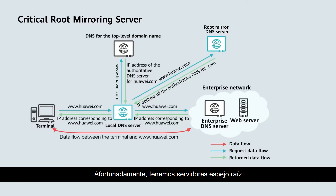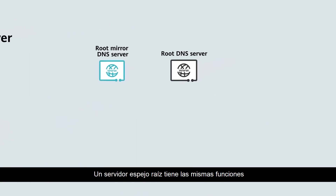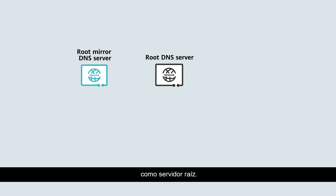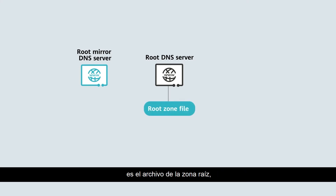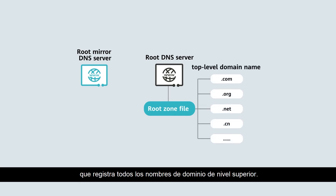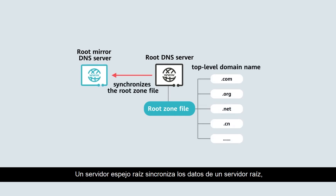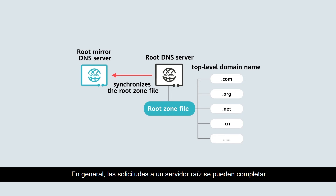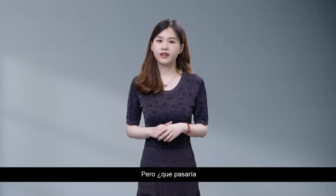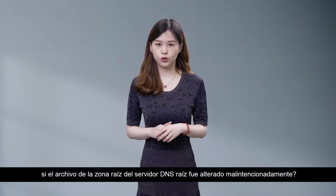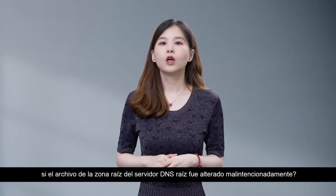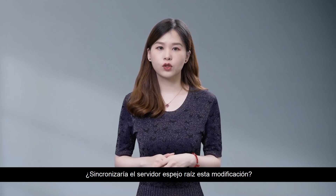Luckily, we have root mirror servers. A root mirror server has the same functions as a root server. The most important thing on a root DNS server is the root zone file, which records all top-level domain names. A root mirror server synchronizes data from a root server, meaning they eventually have the same root zone file. Generally, requests to a root server can be completed through a root mirror server. But what would happen if the root DNS server's root zone file was maliciously altered? Would the root mirror server synchronize this modification?